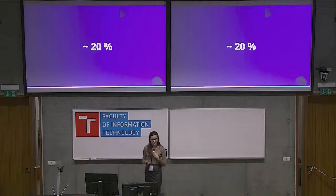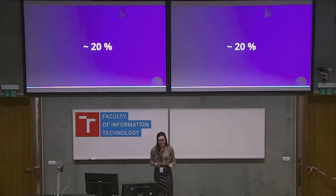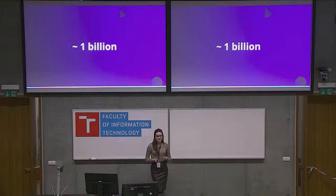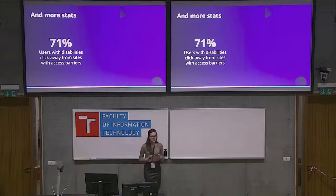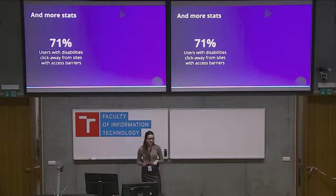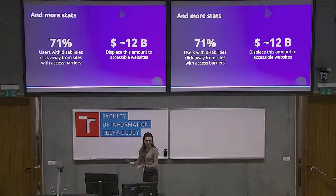And some statistics: did you know that around 20% of people worldwide have some kind of impairment? That's about 1 billion users — every 6th person in the world, quite a significant number. And around 70% of users with disabilities click away from websites with access barriers, displacing around $12 billion to more accessible websites.